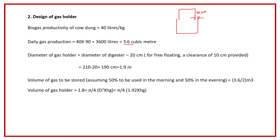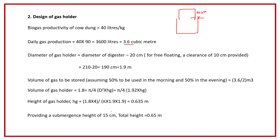The gas holder is also cylindrical, so 1.8 = pi/4 × D² × H_G, where D is 1.9 meters. Solving this equation, H_G is almost 0.365 meters. We also add 15 centimeters of submersion height, so the total height of the gas holder is 0.365 plus 0.15, which gives approximately 0.65 meters or 65 centimeters.